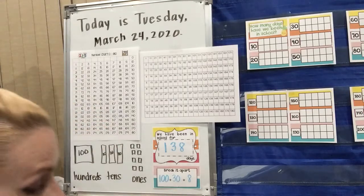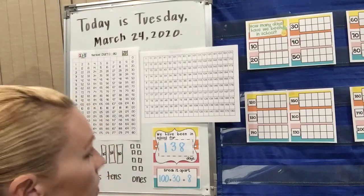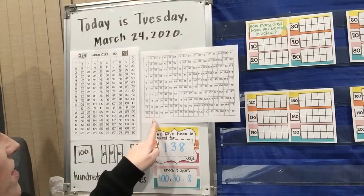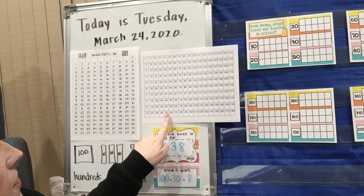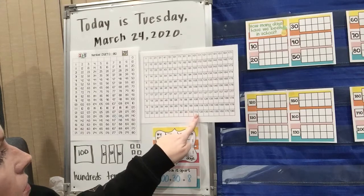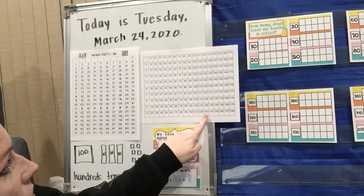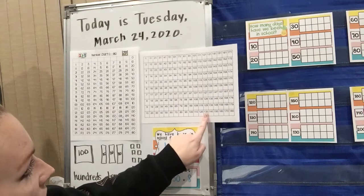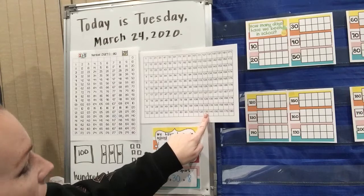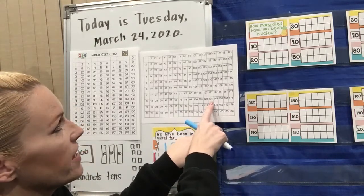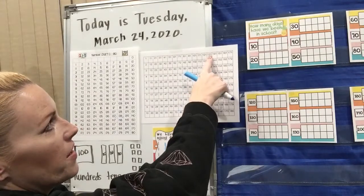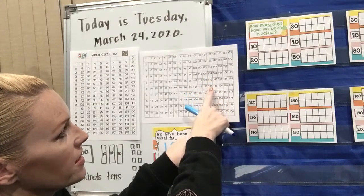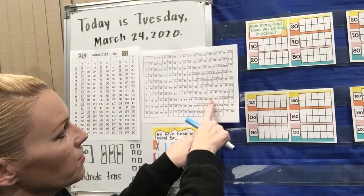And so if we want to find 138 on this other chart over here, it's so interesting because if I want to count by tens, I can actually start at the bottom and go: 10, 20, 30, 40, 50, 60, 70, 80, 90, 100, 110, 120, 130. So if this is where 130 is, 138 is actually right here because it goes 130, 131, 132, 133, 134, 135, 136, 137, 138.